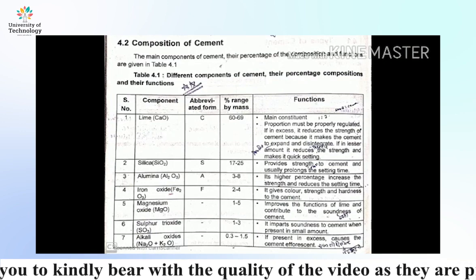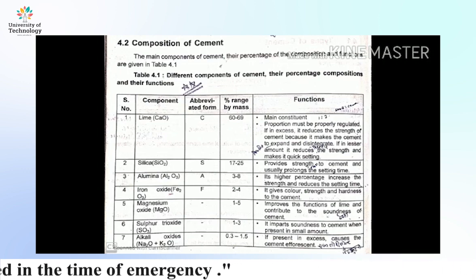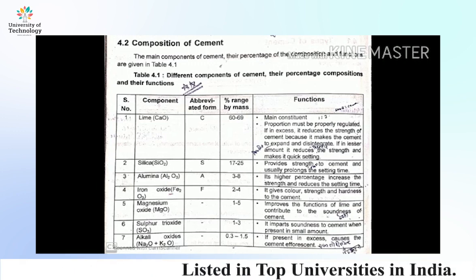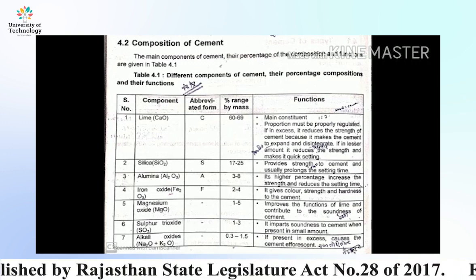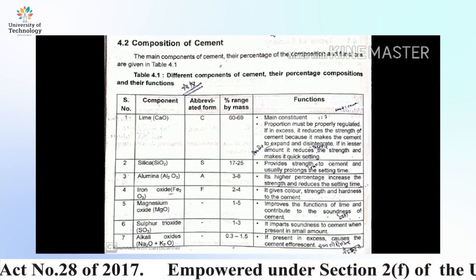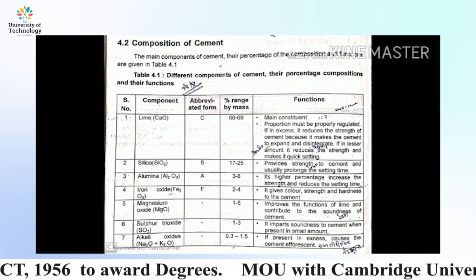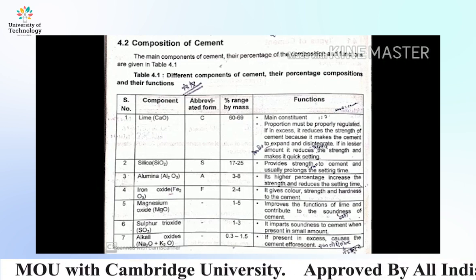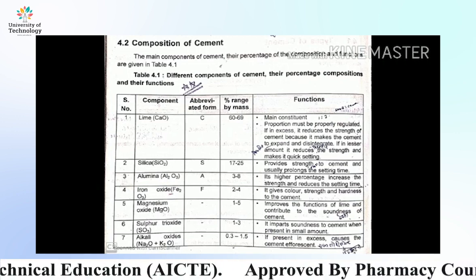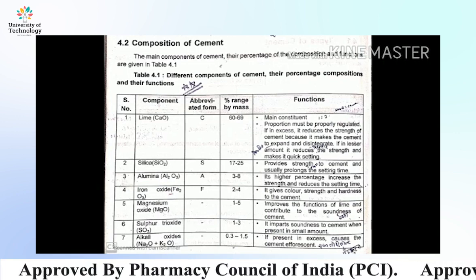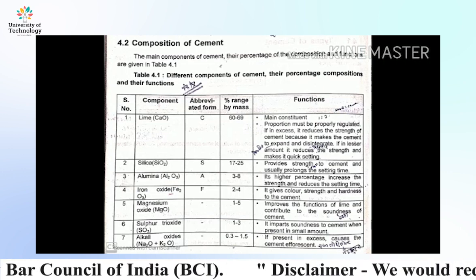Composition of cement: the main components are — lime (CaO), which constitutes 66 to 69 percent; it must be properly regulated, as in excess it reduces the strength of cement because it makes the cement expand and disintegrate. Next, silica (SiO2), 17 to 25 percent, which provides the strength of cement and prolongs the setting time. Next, alumina (Al2O3), 3 to 8 percent; iron oxide (Fe2O3), 2 to 4 percent; magnesium oxide (MgO), 1 to 5 percent; sulfur dioxide (SO2), 1 to 3 percent; and alkali oxide, 0.3 to 1.5 percent — if present in excess, it causes the cement to effloresce.